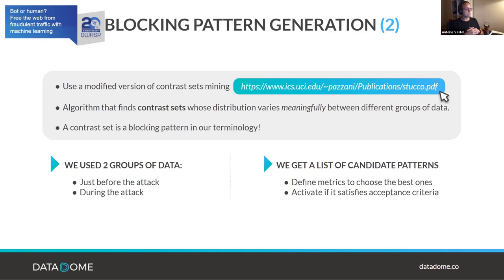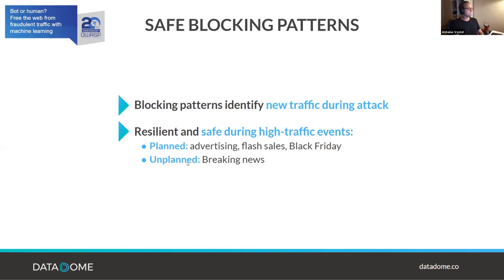Our approach generates contrast sets, which we call blocking patterns, since they characterize potentially malicious traffic. Once we have identified candidate blocking patterns, we define evaluation metrics to choose the best ones — those that block the most malicious traffic while allowing human traffic. If a pattern satisfies our acceptance criteria, we enforce it in real time.